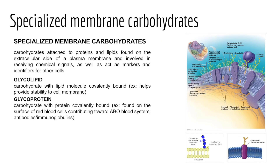We also have specialized membrane carbohydrates protruding from the extracellular surface of the plasma membrane — antenna-like surface carbohydrates commonly found linked to surface proteins forming glycoproteins, as well as to surface lipids forming glycolipids. Their function is to help cells recognize or reject other cells, and they're sometimes referred to as identity molecules. This is thought to explain why skin grafts and organ transplants are sometimes successful and other times not.